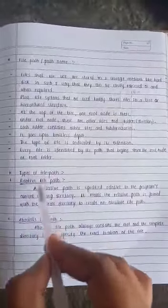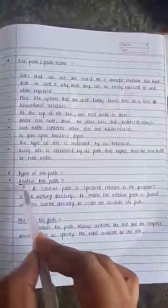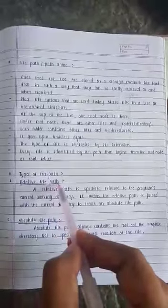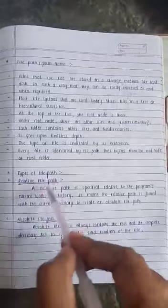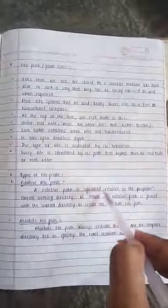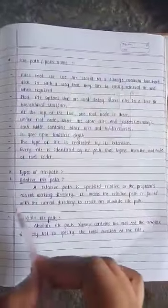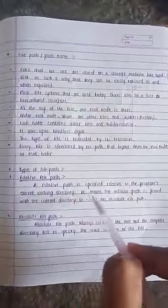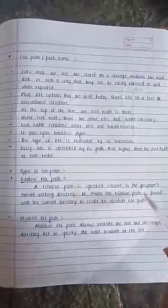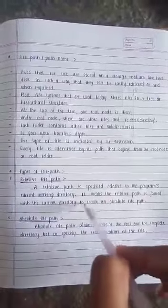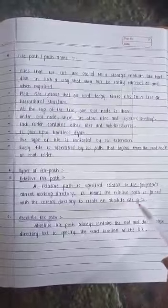Now what are the types of file path? First one is a relative file path. What is relative file path? A relative file path is specified relative to the program's current working directory. It means the relative path is joined with the current directory to create an absolute file path.